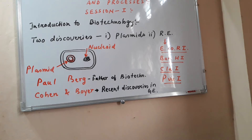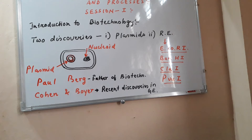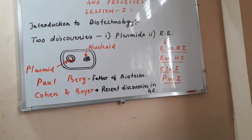Paul Berg is known as the father of biotechnology, recombinant DNA, and genetic engineering. Stanley Cohen and Herbert Boyer made the most recent discoveries in genetic engineering techniques. Paul Berg was the first scientist able to introduce a gene of simian virus 40 into a bacterium with the help of lambda phage virus. He was the first to show that a gene can be transferred from one organism into another.